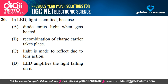Question 20 asks why light is emitted in an LED. The principle of LED operation is that they have a larger depletion region, and due to recombination of charge carriers, photons are emitted. Those photons are responsible for light emission. When recombination of charge carriers takes place, energy is released as photons, and we see light. So light is emitted because of recombination of charge carriers — the correct option is option B.